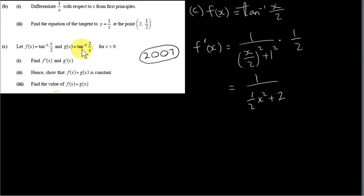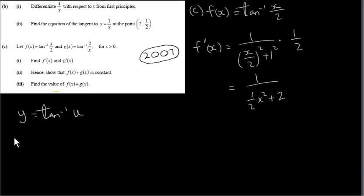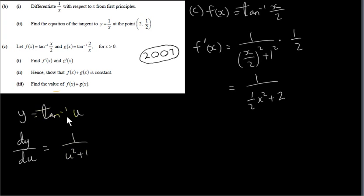Let f of x equal inverse tan of x over 2, and g of x equal inverse tan of 2 over x, for x greater than 0. We want the derivative of f and the derivative of g with respect to x. From an earlier video, the derivative of inverse tan of u with respect to u is 1 over u squared plus 1. This result was proven earlier and can also be looked up in tables.